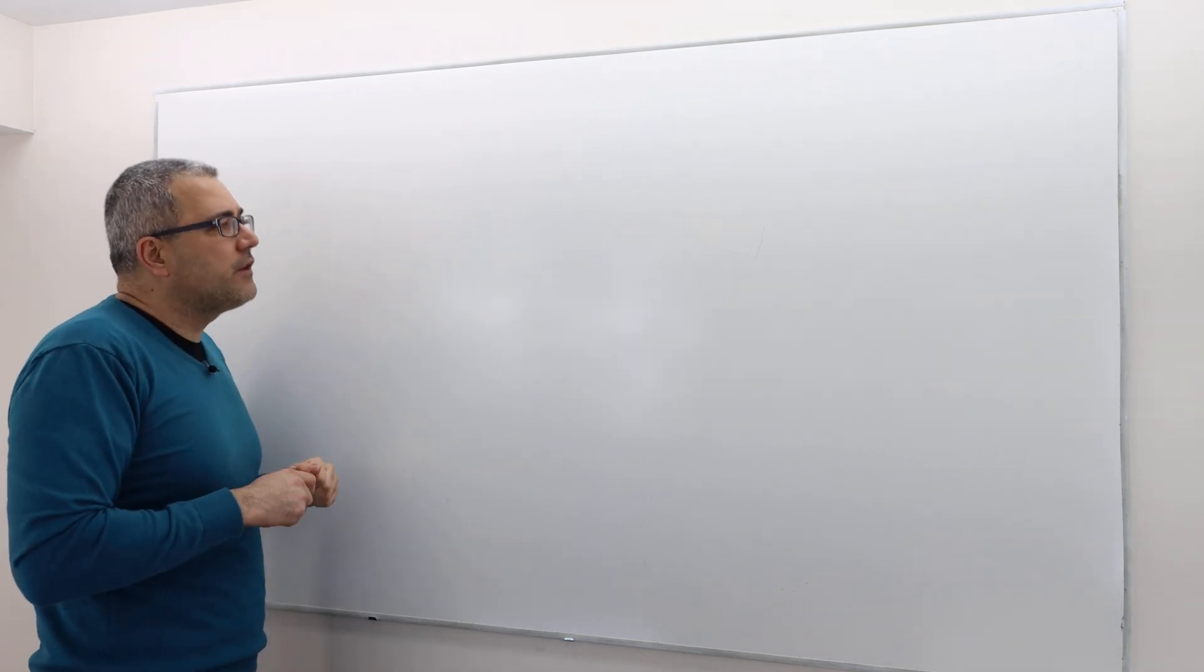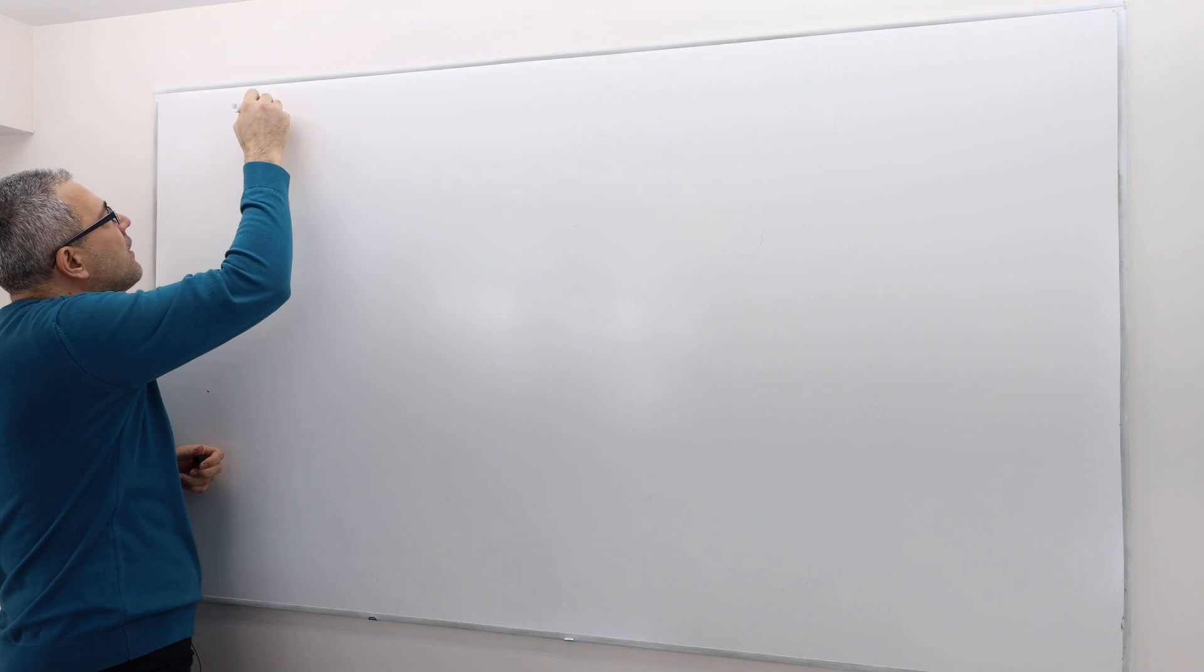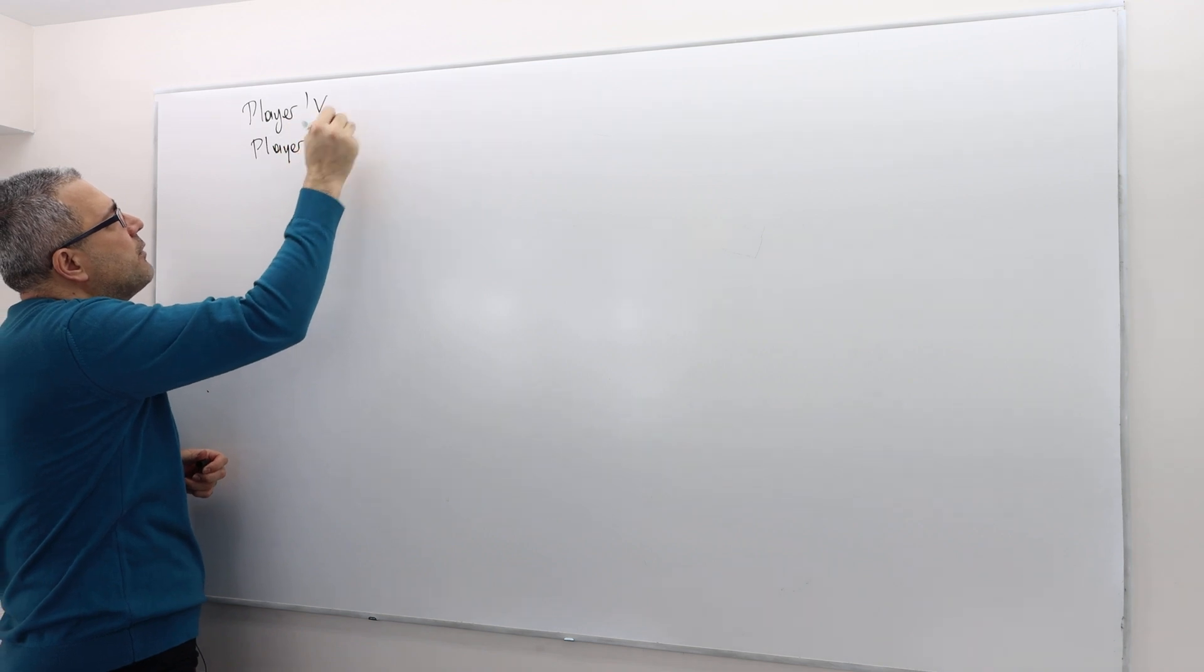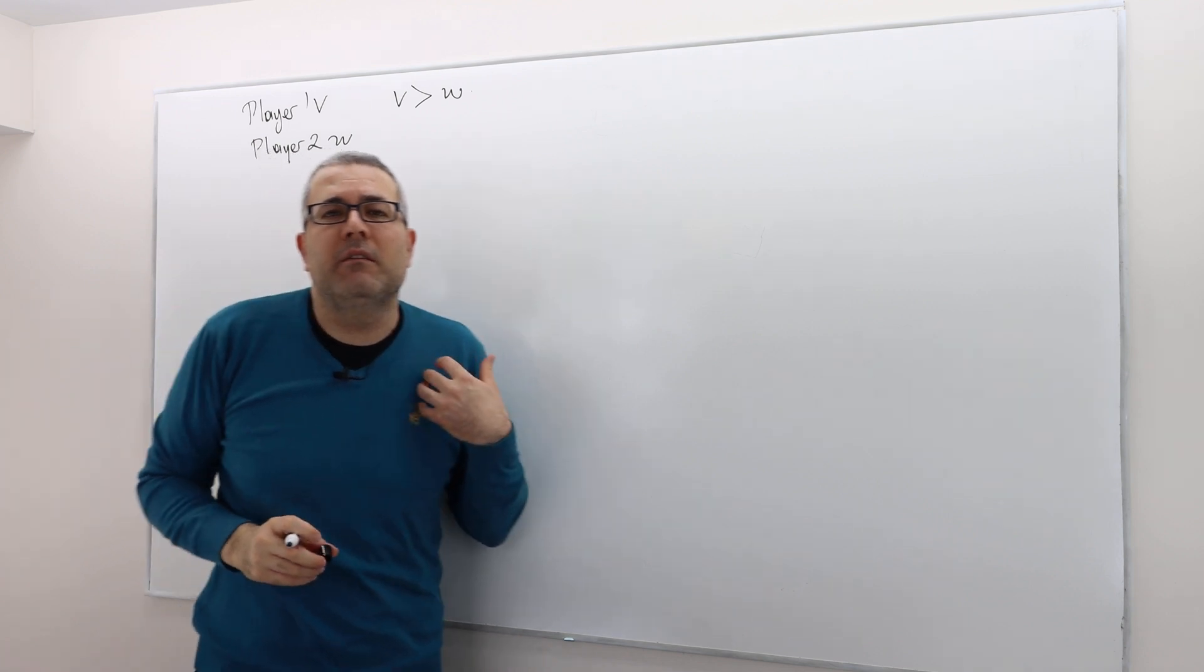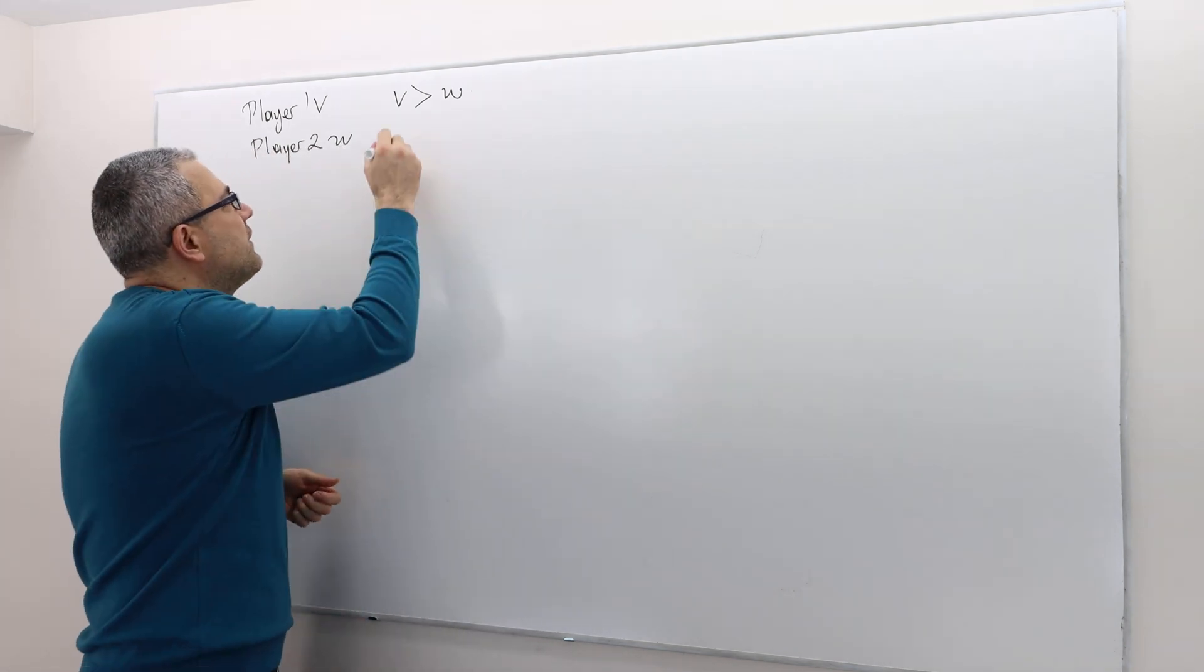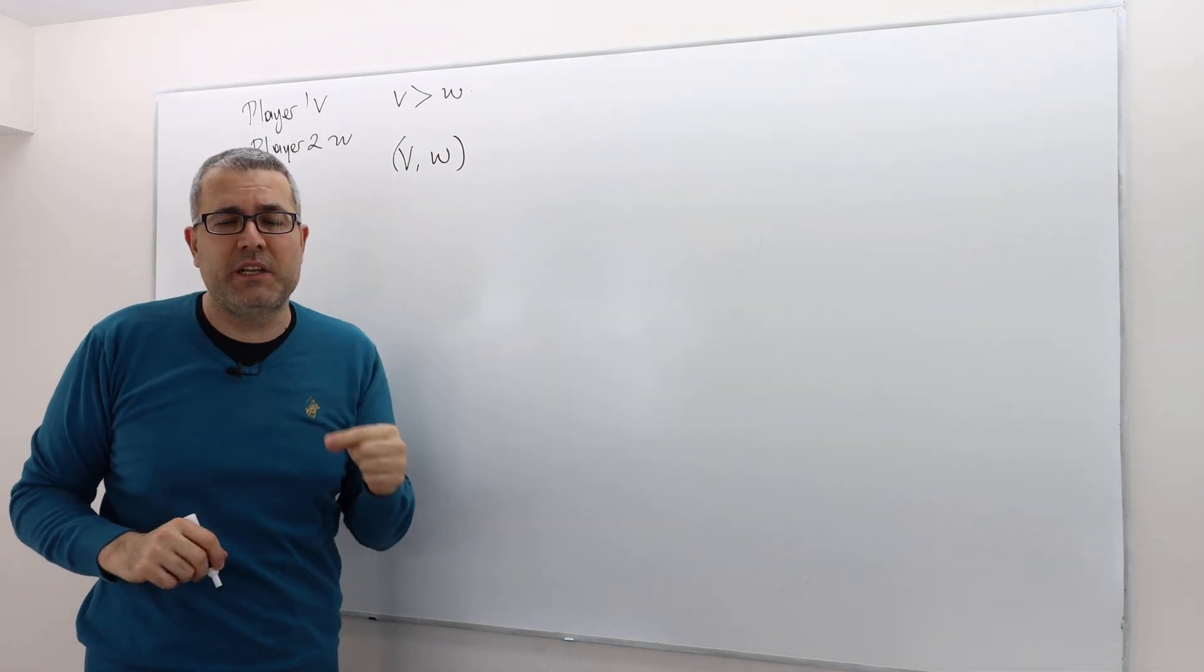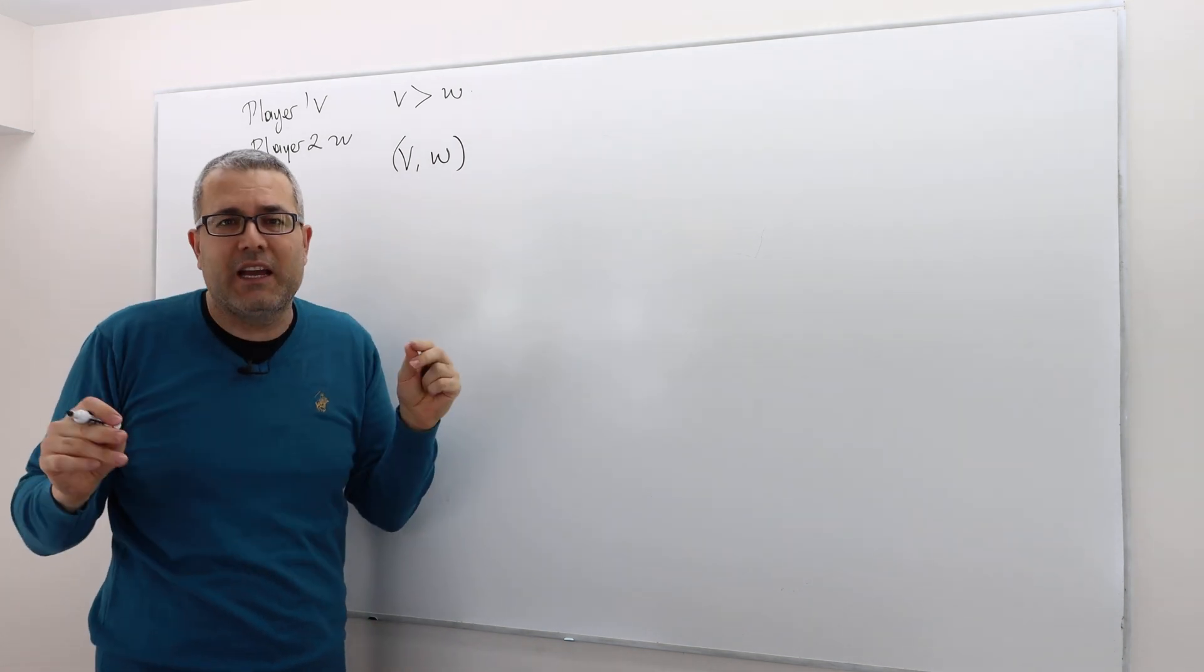The obvious guess is if you remember player one has valuation V and player two has valuation W. And we know that V is greater than W. If I were you, my first guess would be, is this a Nash equilibrium? Meaning player one bids his valuation. Player two also bids his valuation. Can I support this as a Nash equilibrium? That's a guess.